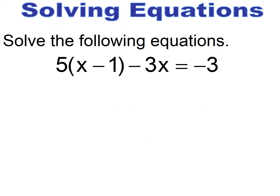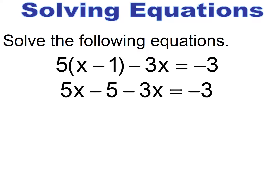Pause and try. Double check your distributive property: 5 times x is 5x, 5 times 1 is 5, then bring down the minus 3x equals negative 3. Combine like terms here.